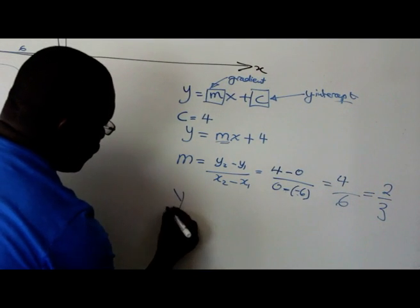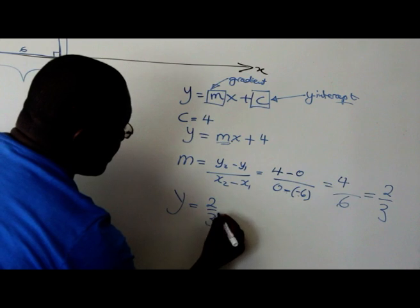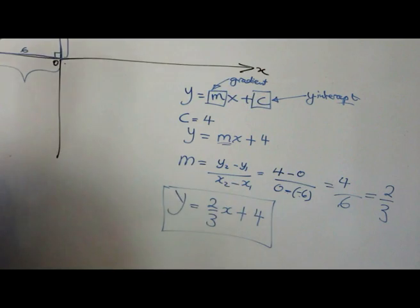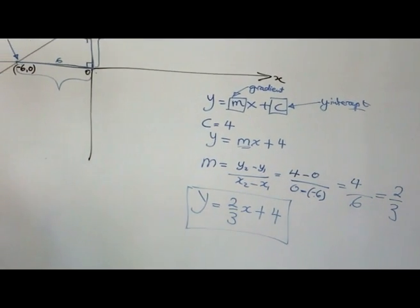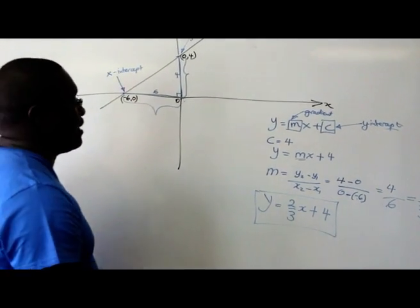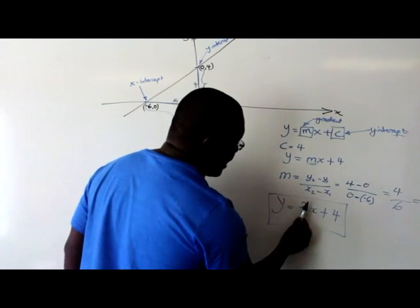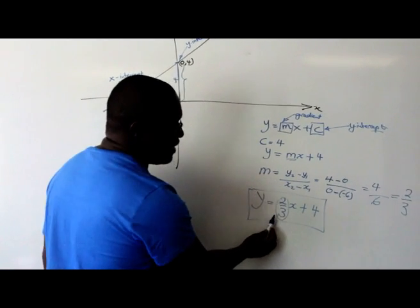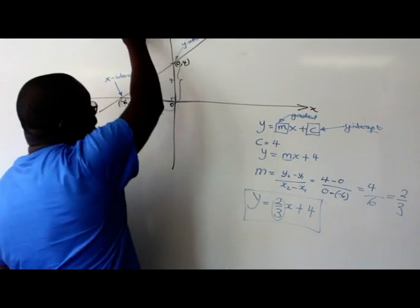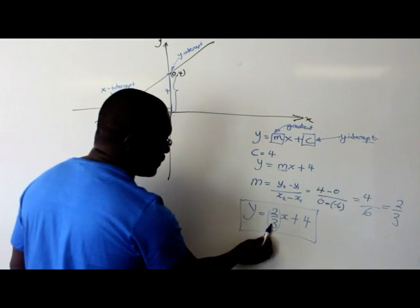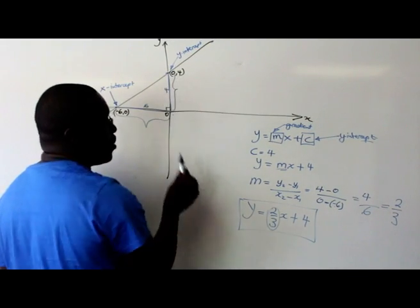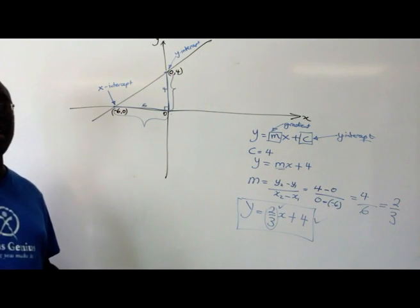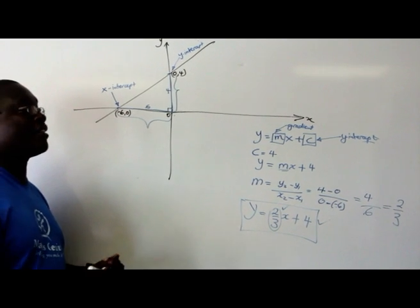So that means that your graph would be 2 over 3x plus 4. That is the equation of the straight line. And we know that this answer is correct just by doing a sense check to say, is the gradient. If this was a negative number, then we would be saying the graph is going that way. But it's positive. And the intercept is also 4. So it means that we have passed the tests and this is our equation for the straight line graph.